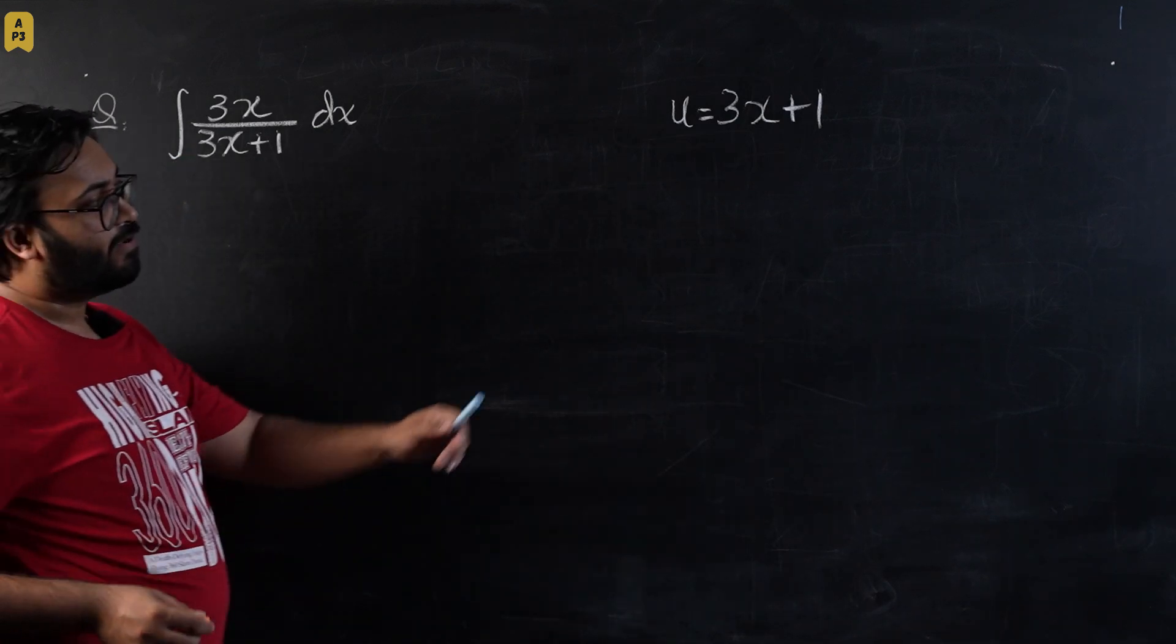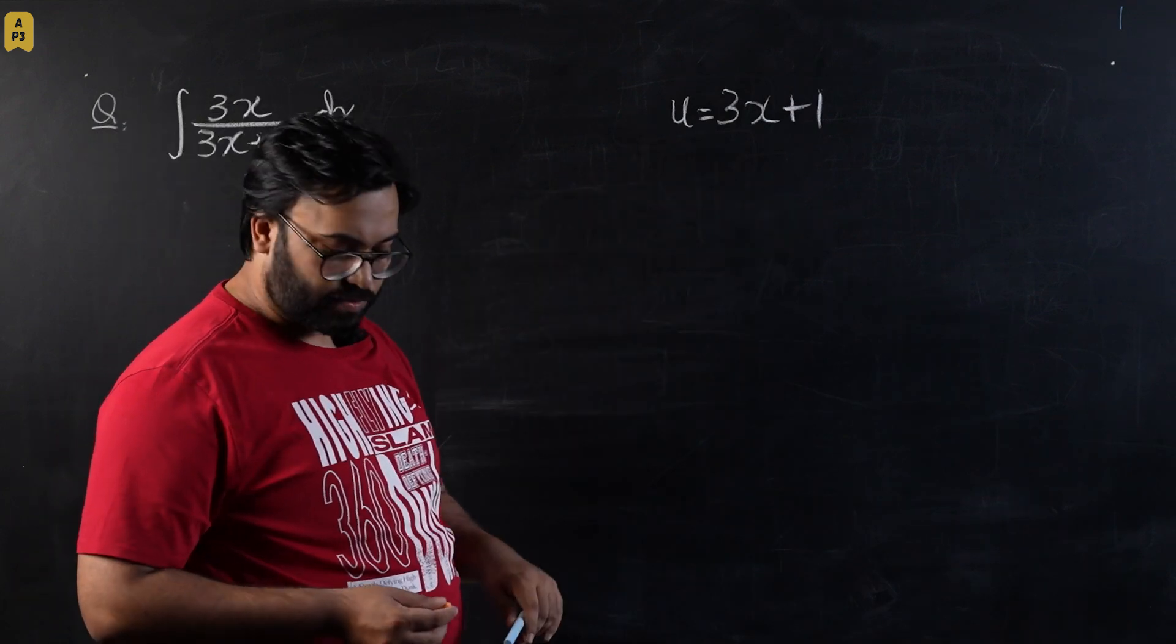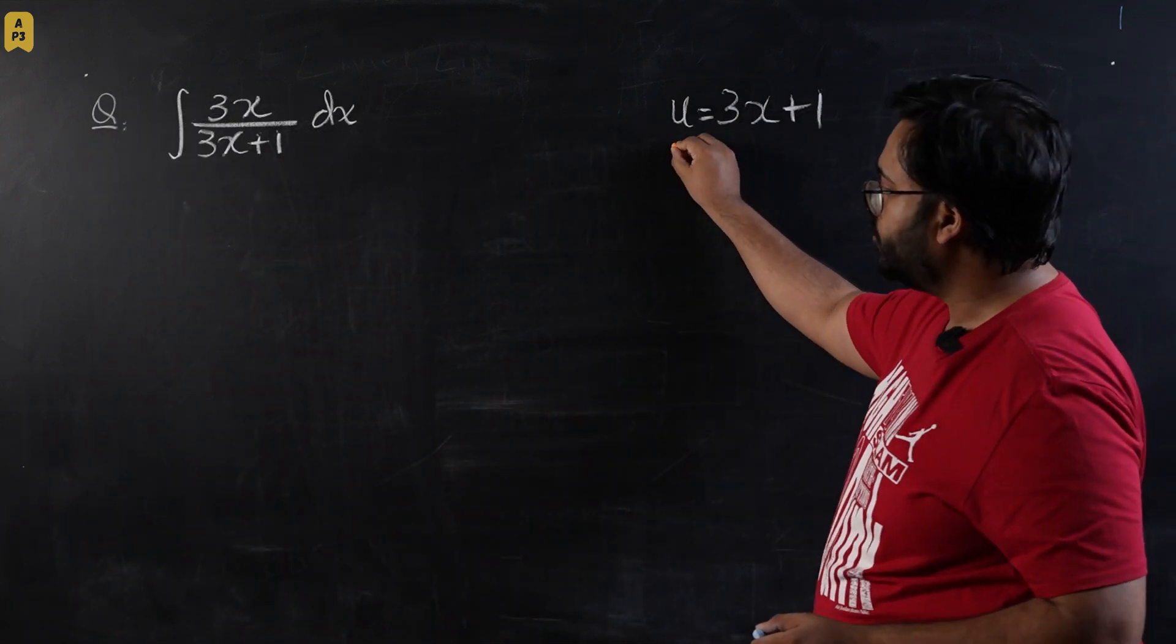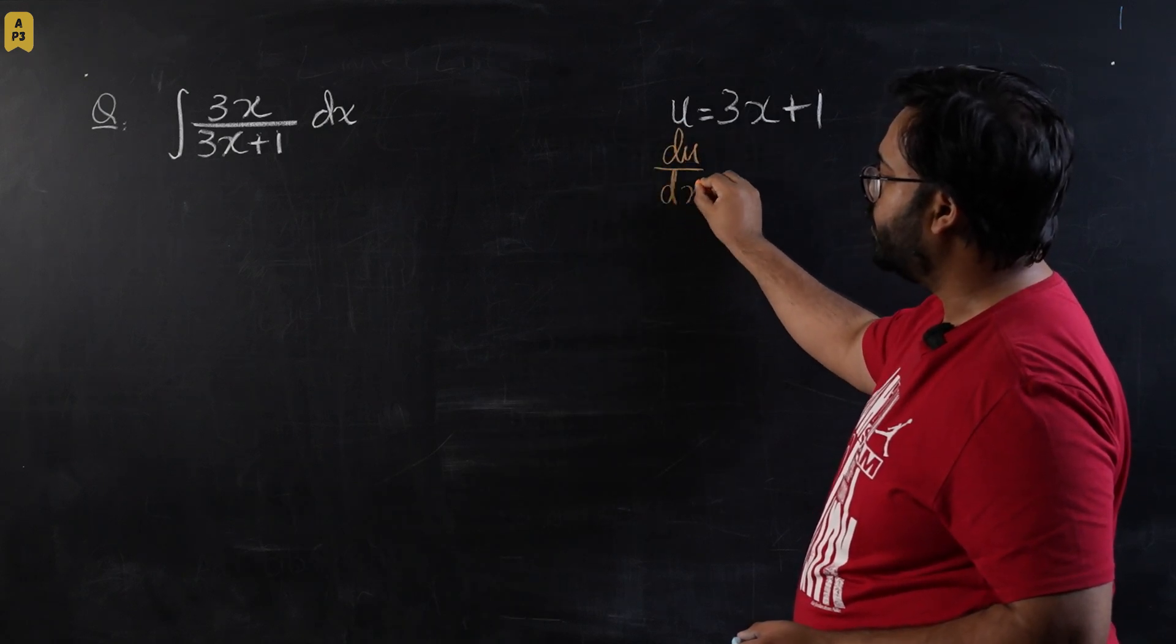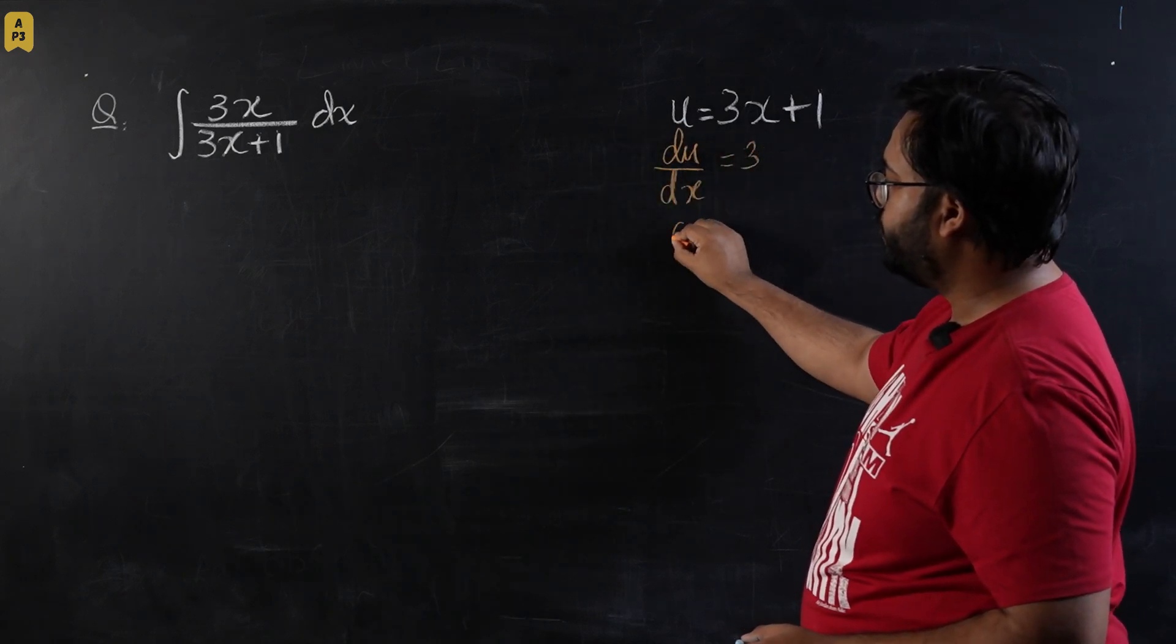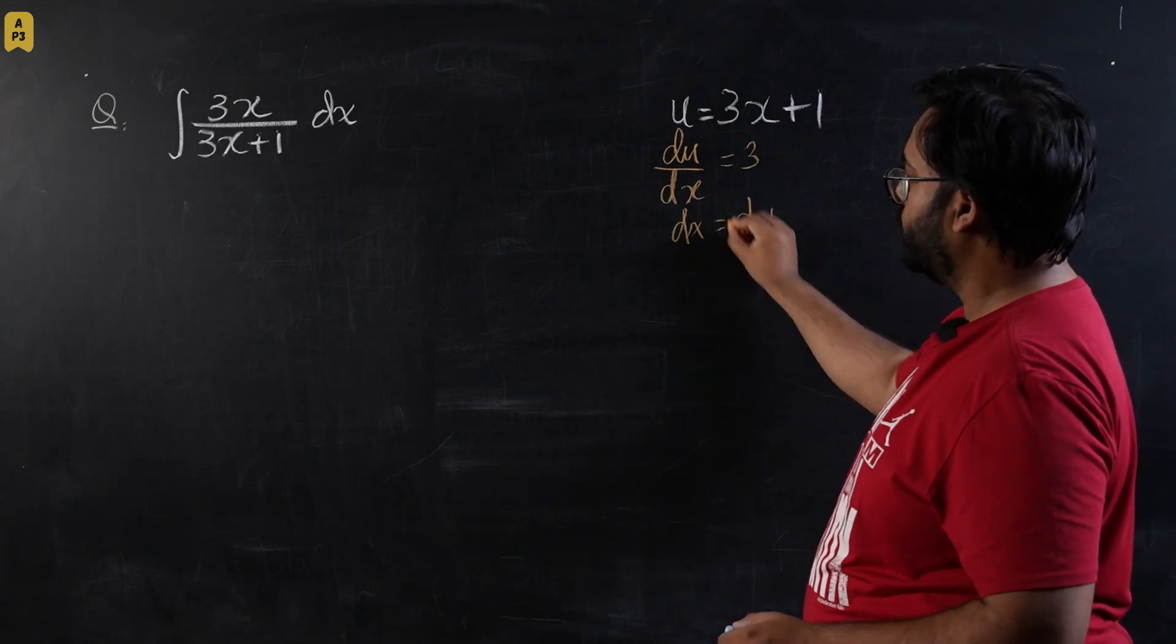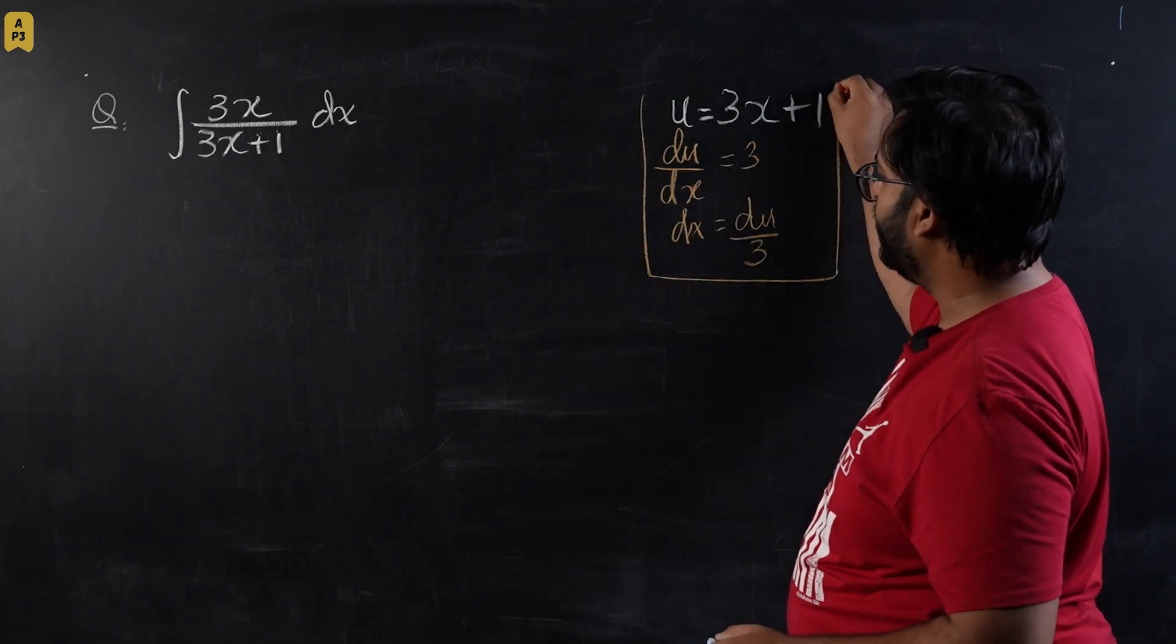As usual, we are going to start by differentiating the substitution, and we're going to say du/dx will be equal to 3. And if I want to find dx, that will be du upon 3. So this is the first section of my working where I differentiate my substitution.